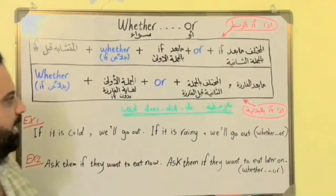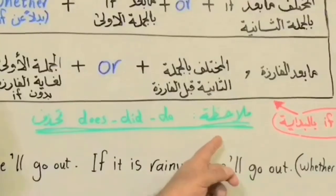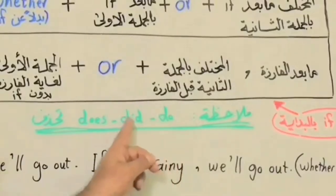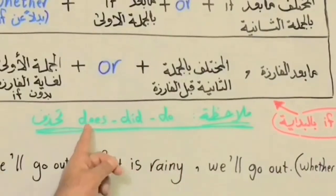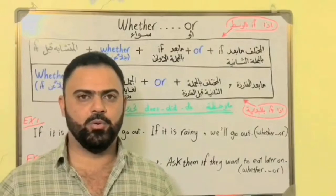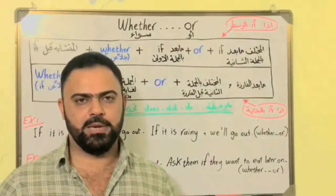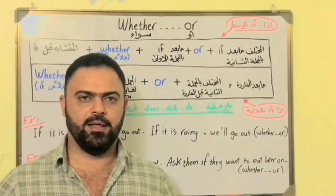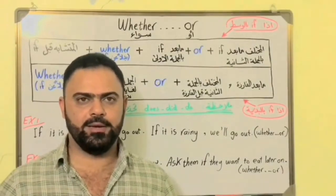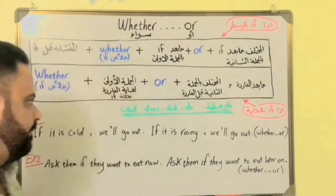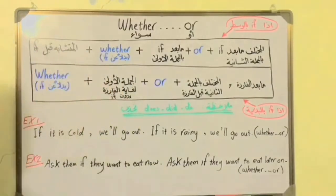We also have an important point: if we see do, did, or does, then it will be omitted. Whether it's the first or the second rule, we apply the same approach. Now let's go to the first example.